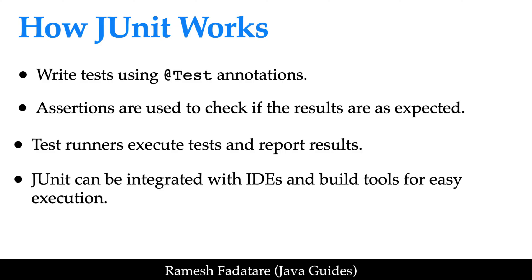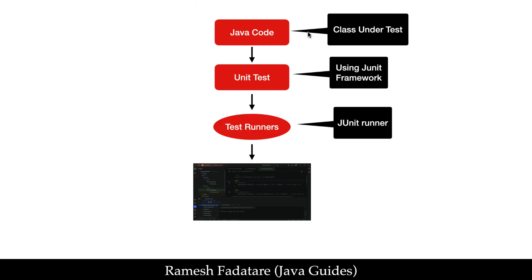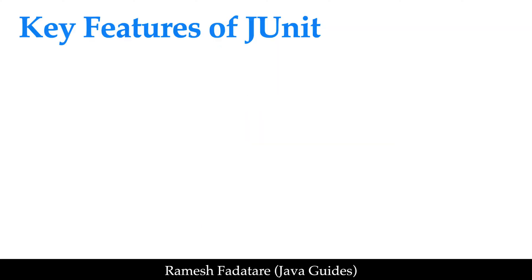JUnit also works perfectly with build tools like Maven or Gradle, so it has good integration with both IDEs and build tools. To summarize how JUnit works: we have a Java code we want to test, known as the class under test. We write a unit test using JUnit framework, which provides annotations to write the test cases. Then test runners execute the unit test cases and report the results.